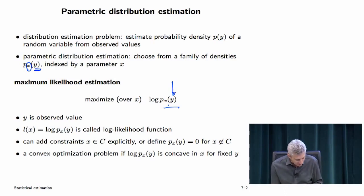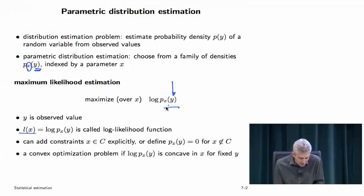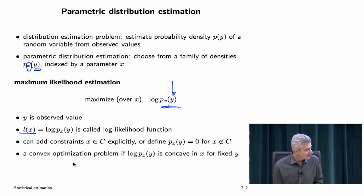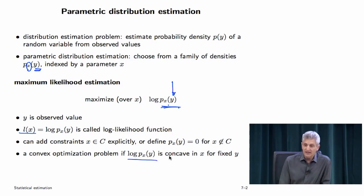The log likelihood function L(x) can have constraints added to it — often implicit ones. For example, the parameter might include a covariance matrix if your family is Gaussians, so the covariance parameter must be positive definite. If it's not, the density is zero there and the log is minus infinity, which is infinitely bad when maximizing. The MLE problem is convex if the log likelihood is concave in the parameters — note this is different from a log-concave distribution; it's log-concave in the parameters describing the family.